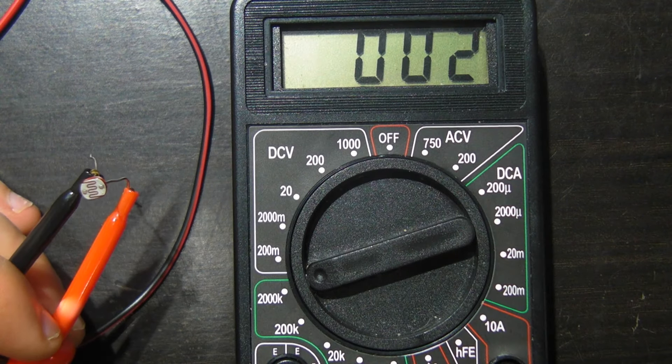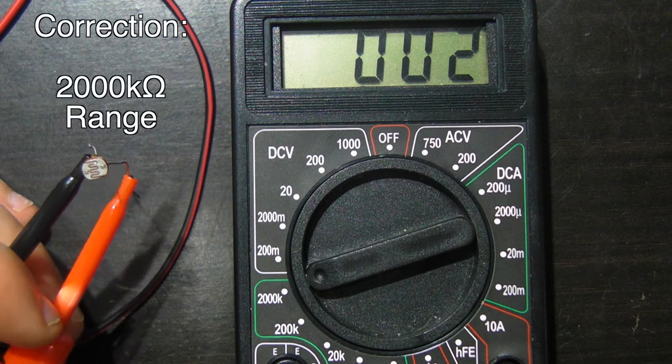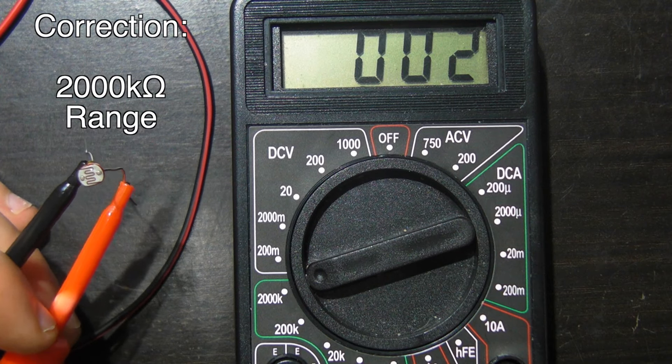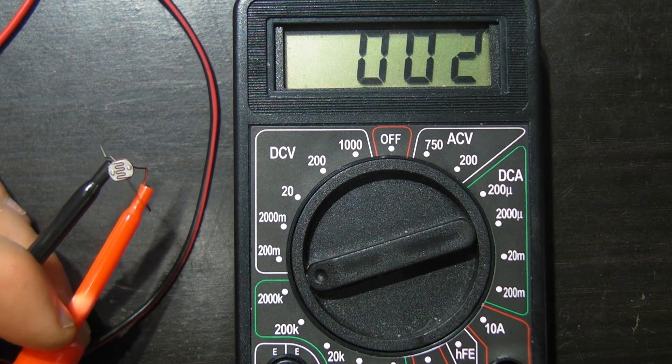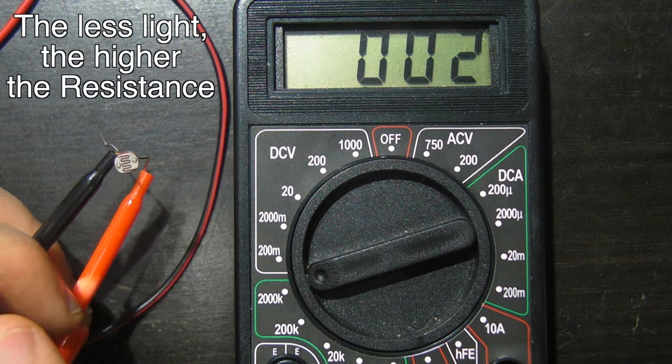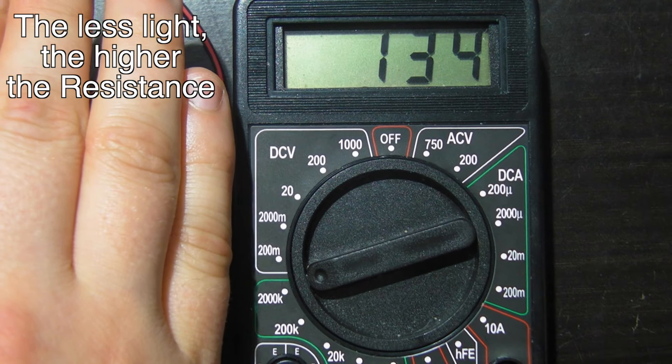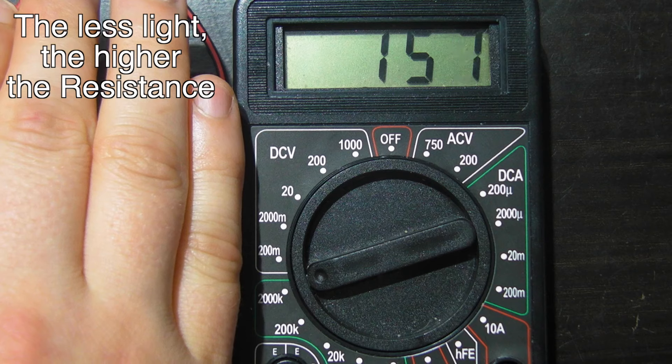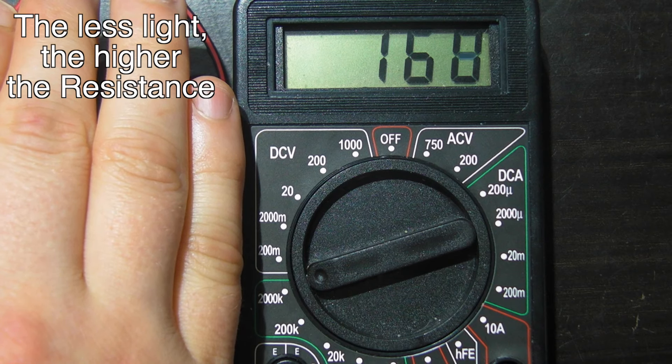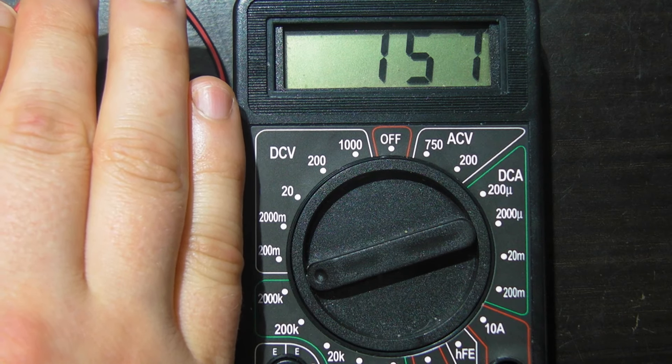Now watch what happens when I cover the LDR. I am now back in the 20 kiloohms range of this multimeter, and currently we are showing 2 kiloohms. So let's cover this LDR and see what happens. As you can see, I have covered this LDR, and now the resistance has climbed up to over 150 kiloohms. This is a very high resistance.